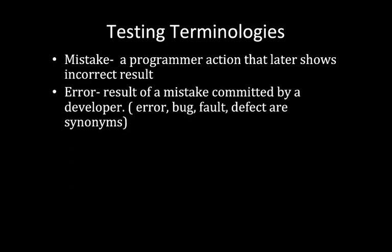The second terminology is 'error.' An error is the result of a mistake committed by a developer. We use several names for error — it can be called a bug, fault, or defect; these are all synonyms, even though 'fault' is actually used more specifically for hardware systems. If a programmer commits a mistake, it results in an error.